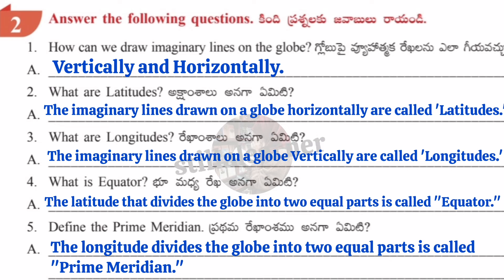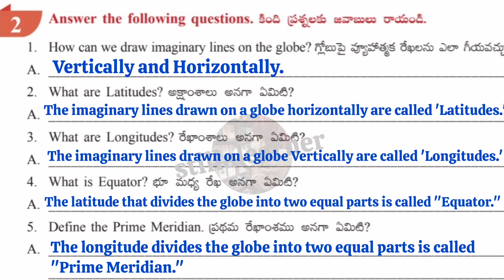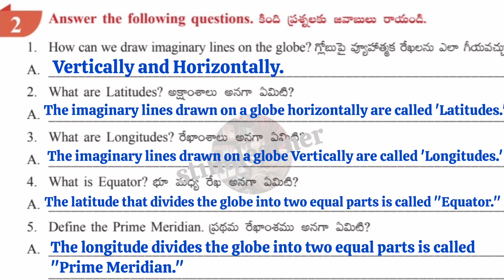Question two: What are latitudes? Answer: The imaginary lines drawn on a globe horizontally are called latitudes. Question three: What are longitudes? Answer: The imaginary lines drawn on a globe vertically are called longitudes. Question four: What is the equator? Answer: The latitude that divides the globe into two equal parts is called the equator.